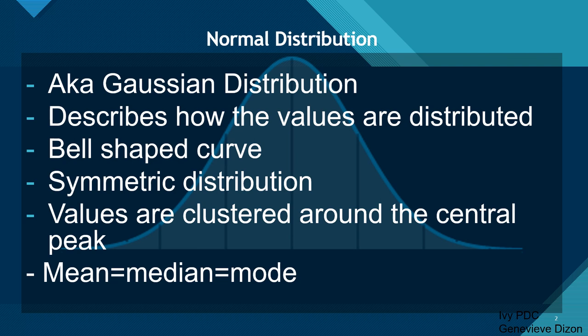With the normal distribution, the mean is equal to the median, and the median is equal to the mode. That means all three measures of central tendency are equal to each other.